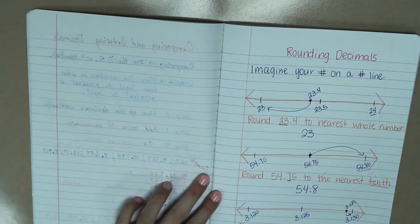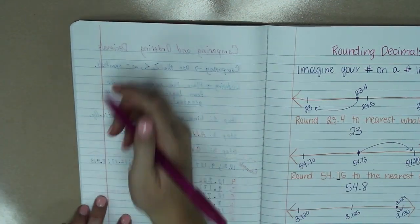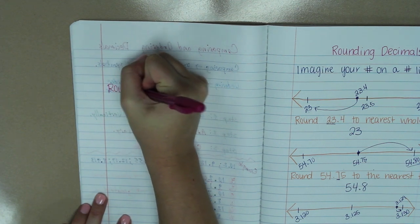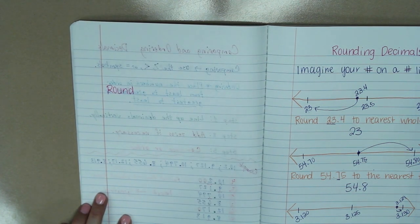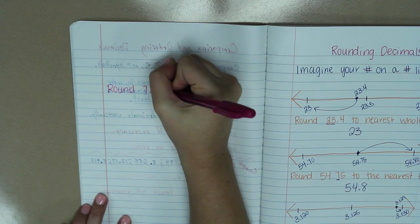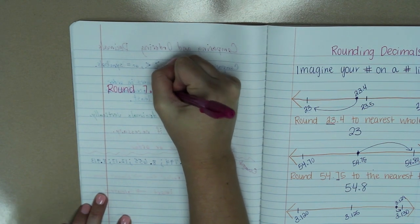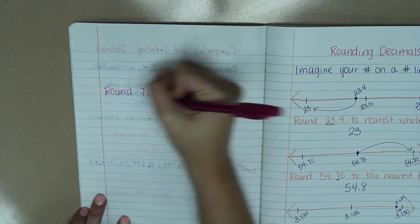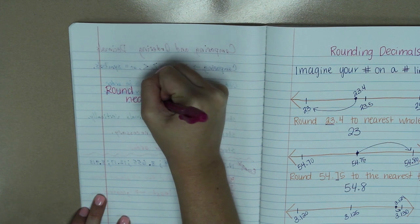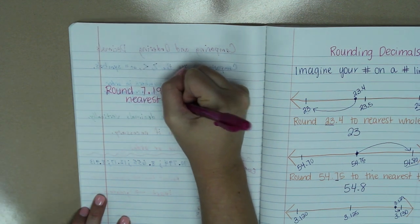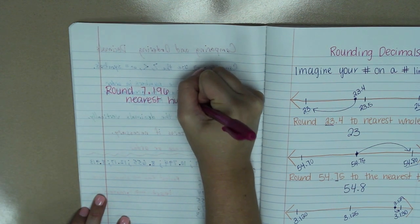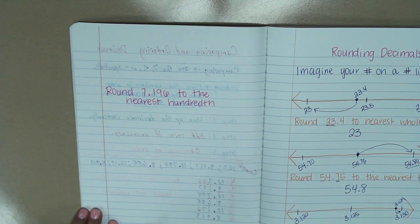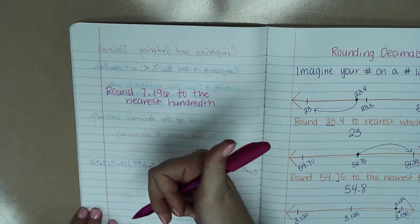Okay. On the left hand side, you are going to do your own example. So I want you to round 7 and 196 thousandths to the nearest hundredth. Make sure you draw your number line and label each value. Good luck!